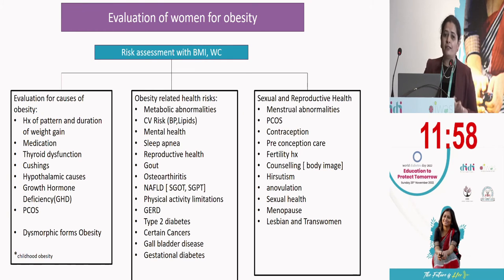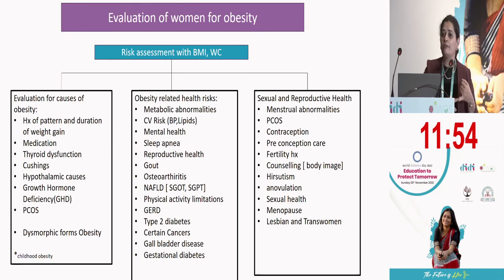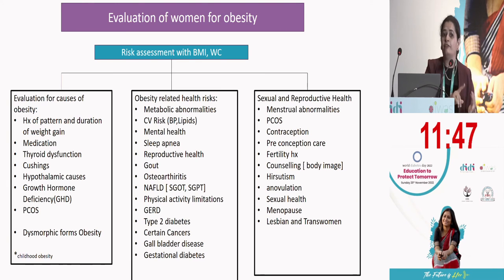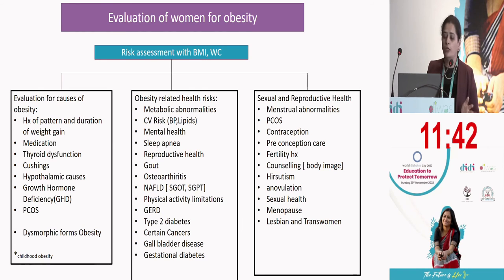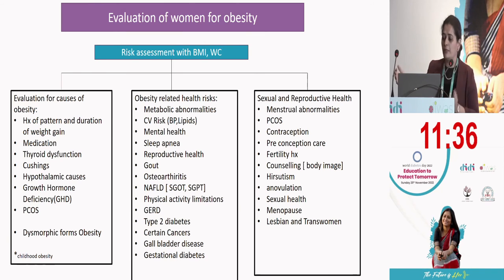Obesity-related risk factors: the previous panel also said that we need to evaluate for metabolic health risks, for mental health risks, and for the mechanical health risks that are associated with obesity. We can divide these parameters into these three patterns.